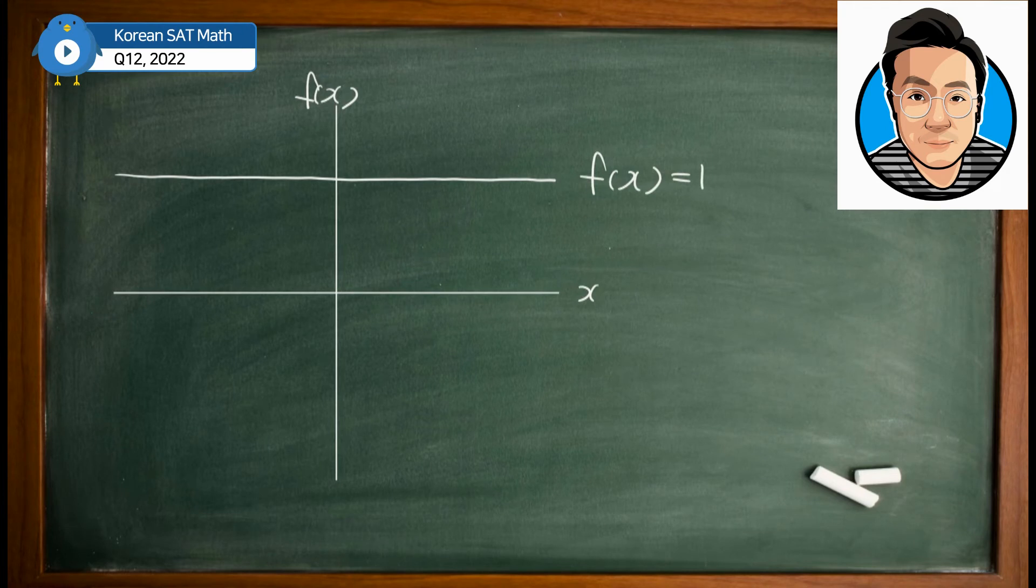This is f(x) = 1. And the other two are actually functions. One of them is positive x that goes up.